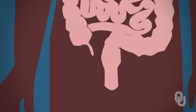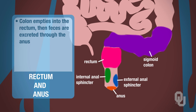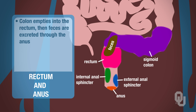Lastly, we have the rectum and the anus. This is the last part of the major structures of the gastrointestinal system. The colon empties into the rectum, and feces get excreted through the anus. So your chyme comes down through the rectum and out the anus.